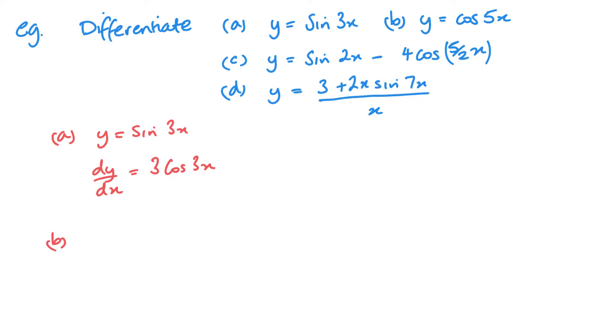Part b, very similar. y equals cos 5x. So differentiating this, cos differentiates to negative sin. And I'm multiplying by the differential of 5x, which is 5. So it's minus 5 sin 5x.